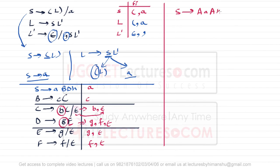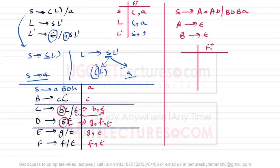Let's take one more example. Assume the grammar is: S derives A A A A B or B B B A, where capital-A derives epsilon and capital-B derives epsilon. We need to find the First of S, A, and B. For S, if A is replaced by epsilon the first symbol becomes small-a, and if B is replaced by epsilon the first symbol becomes small-b. So the First of S is small-a and small-b.